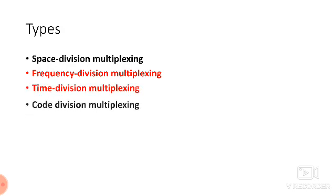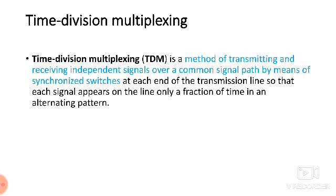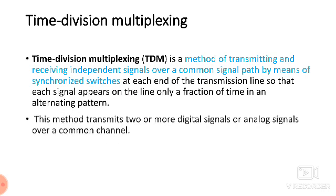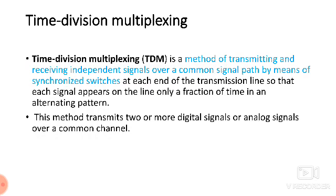Multiplexing is classified into different types: space division, frequency division, time division, and code division. Time division multiplexing is the method of transmitting and receiving independent signals over a common signal path by means of synchronized switches. These switches rotate, transmitting different signals in different time slots through a single medium.